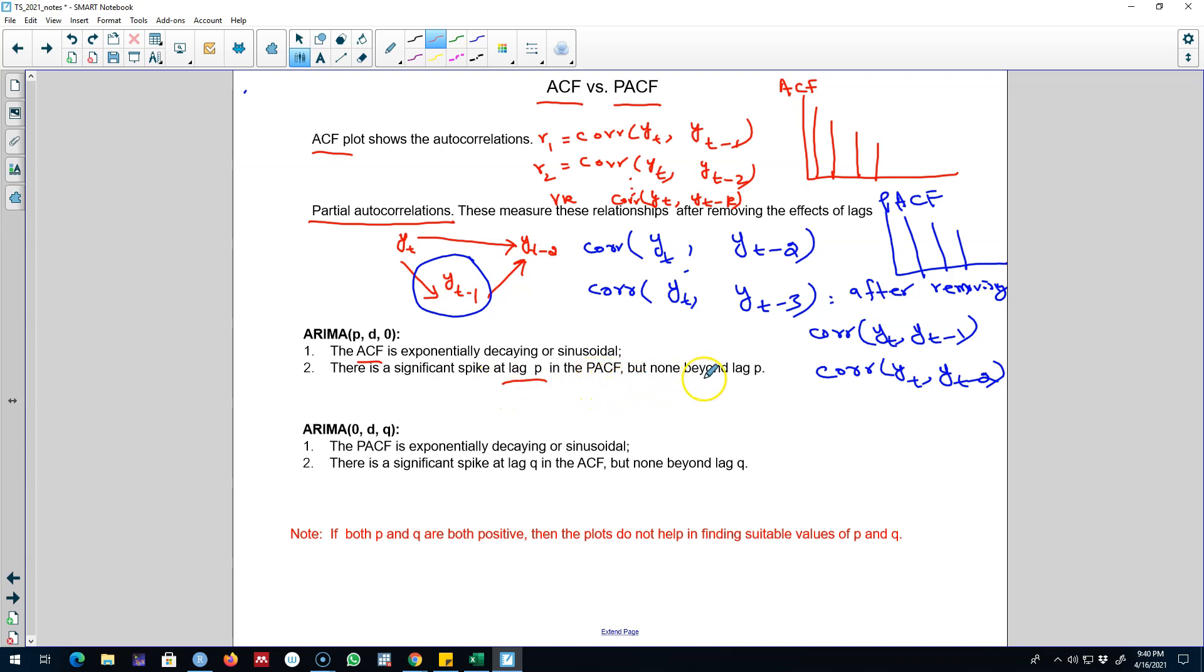but none beyond lag p. On the other hand, we'll choose an ARIMA model of (0,d,q) - that is, we'll only choose the moving average component of the ARIMA model and will not include any AR process in